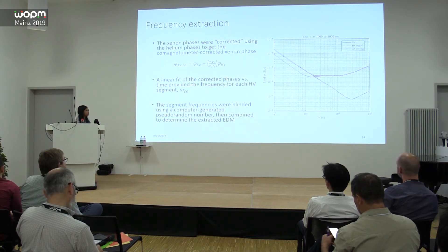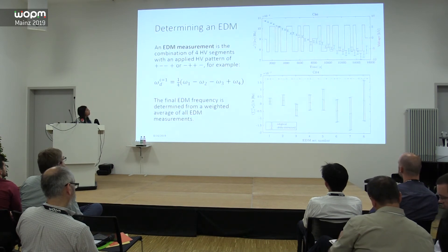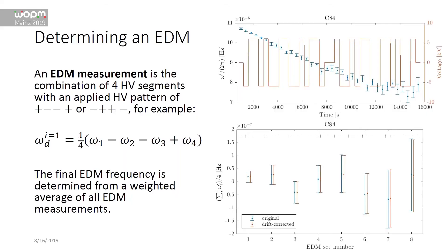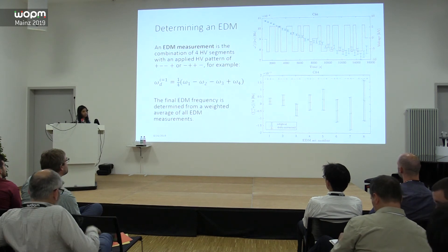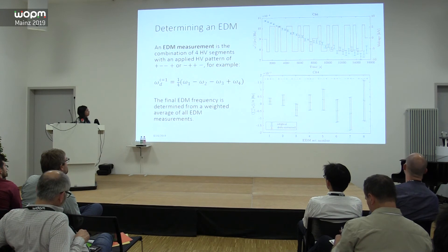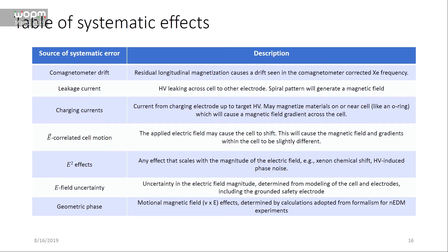We obtain comagnetometer frequencies for each segment and blind them before analysis. To mitigate the visible drift across the 36 frequencies, we combine segments in sets of four using a +−−+ pattern. This plus-minus-minus-plus (or minus-plus-plus-minus) pattern removes any linear drift; a small correction is made for residual nonlinearity. The resulting EDM frequencies are then averaged over all measurements to get our EDM.